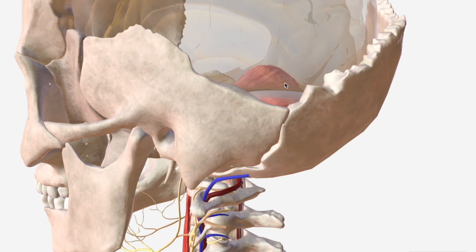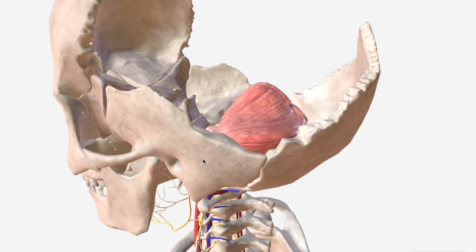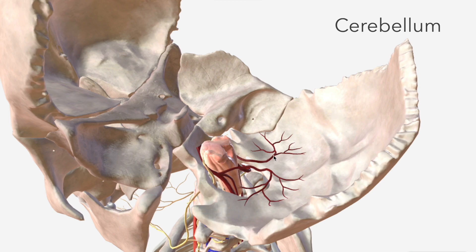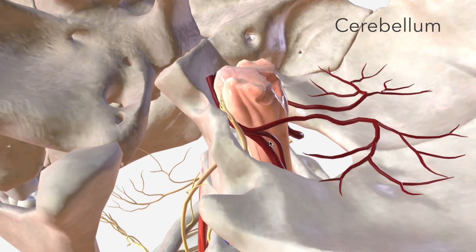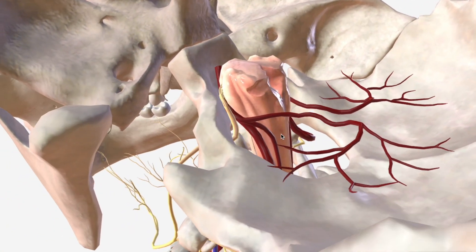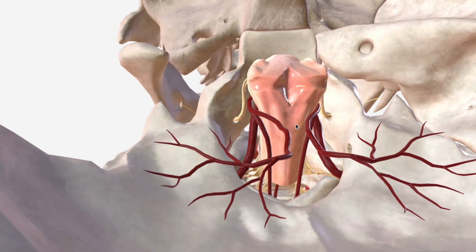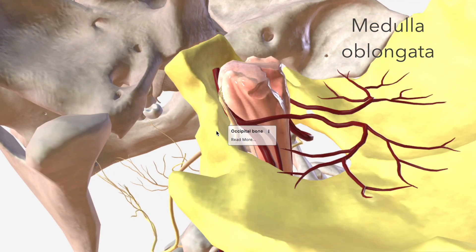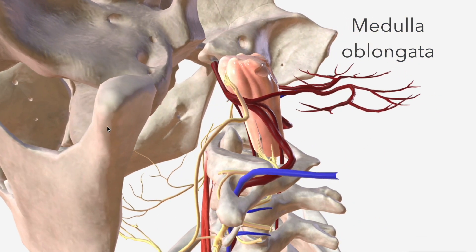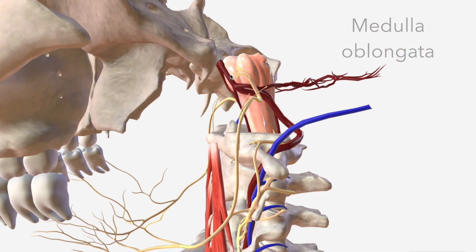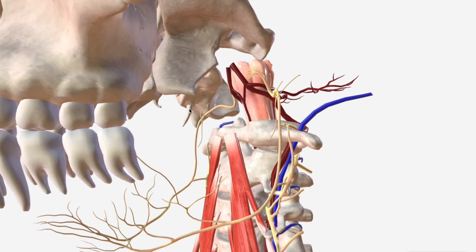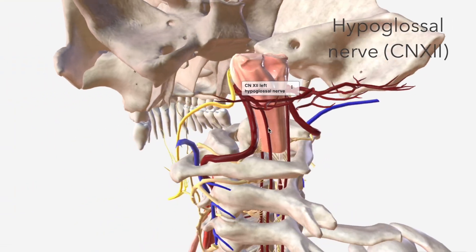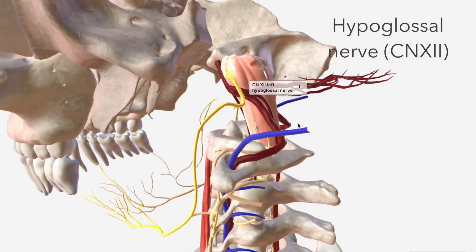If we enter the skull cavity, we can see the cerebellum, and if we remove the cerebellum, we see the posterior inferior cerebellar arteries. Just here we see the medulla, which the vertebral artery contributes to the arterial supply of. On the anterior aspect of the medulla, we have the departure point of the hypoglossal nerve, which curves over the vertebral artery.